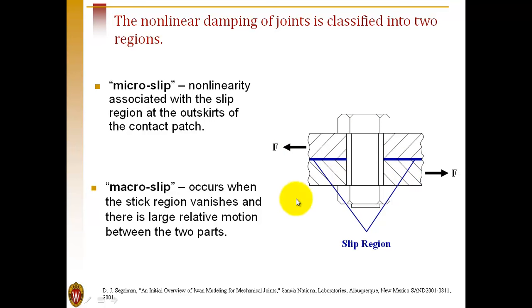Macro-slip is what would occur if we applied a large force and the joint slips completely. While this is important in some applications, typically we design our structures with clamping forces large enough to prevent the joint from going into macro-slip.